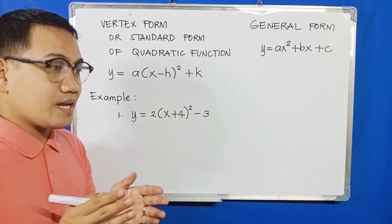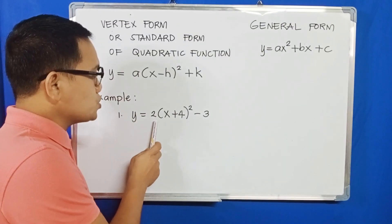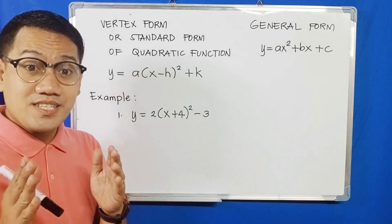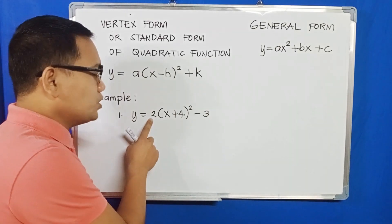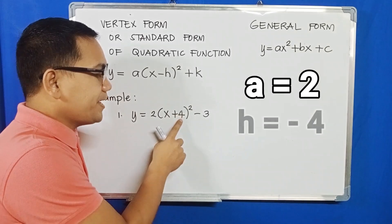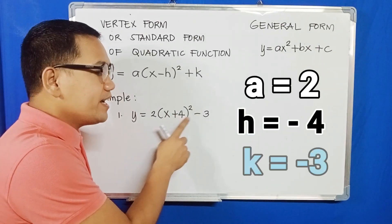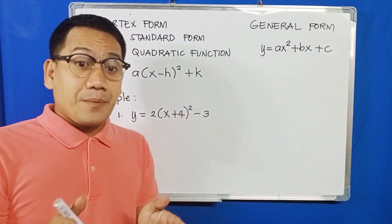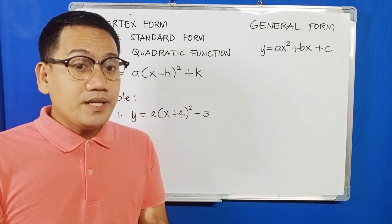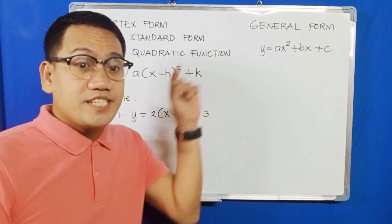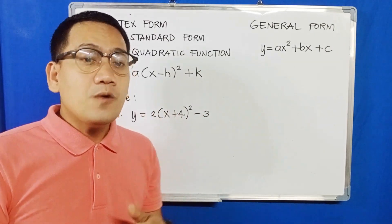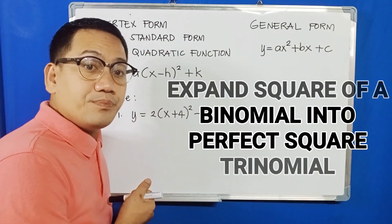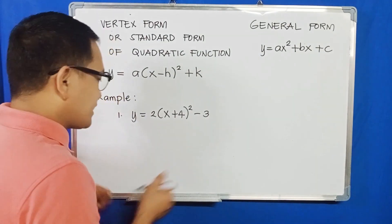Our first example is y equals 2 times the quantity x plus 4 squared minus 3. Here, a is 2, h is negative 4, and k is negative 3. The first step in transforming this vertex form into general form is to expand the square of the binomial into a perfect square trinomial.